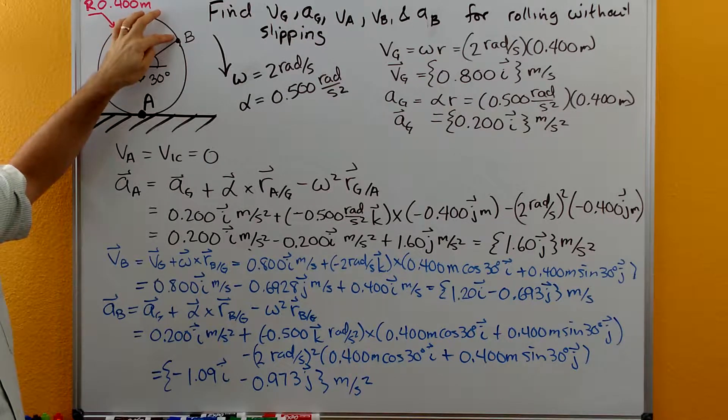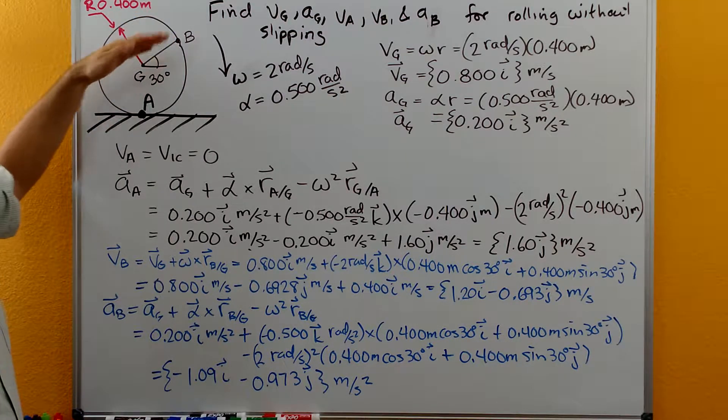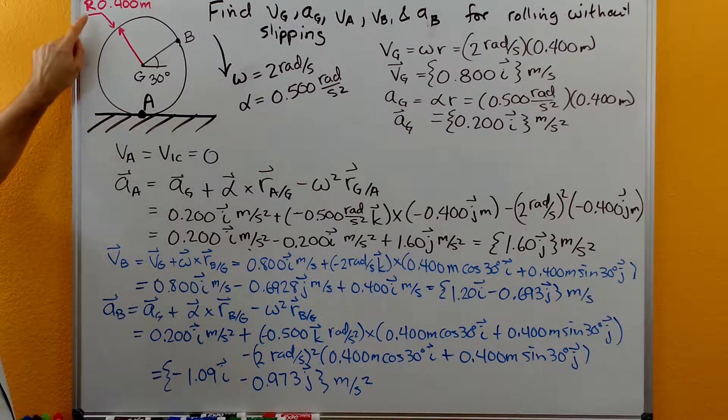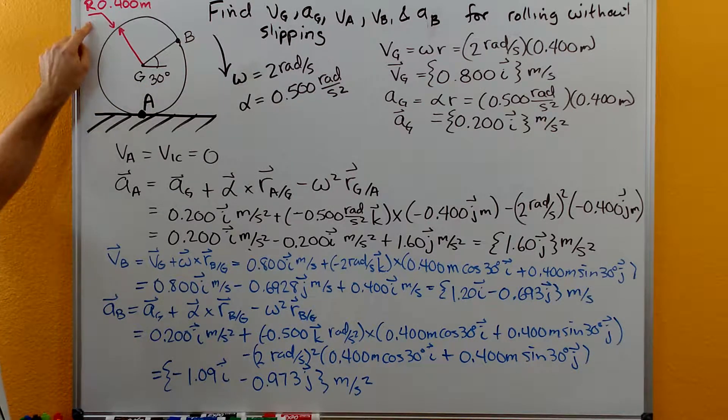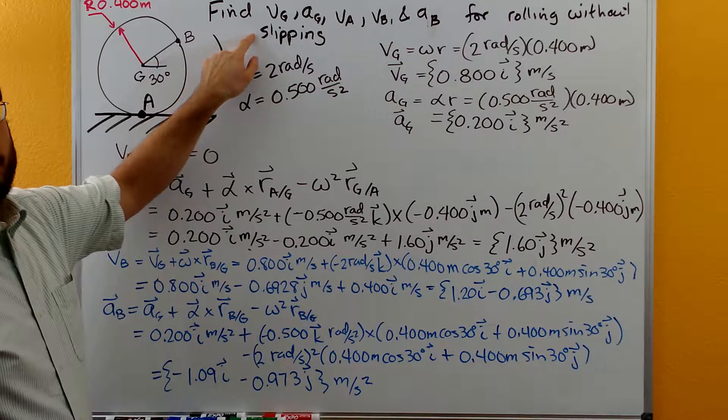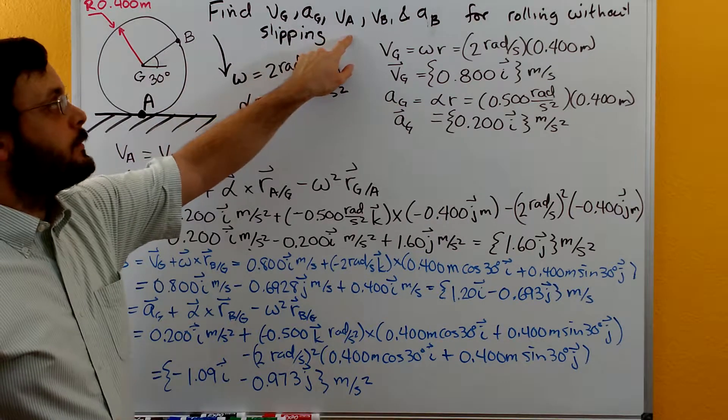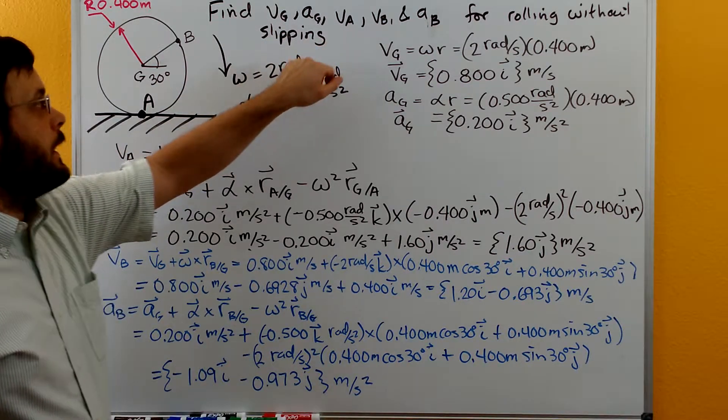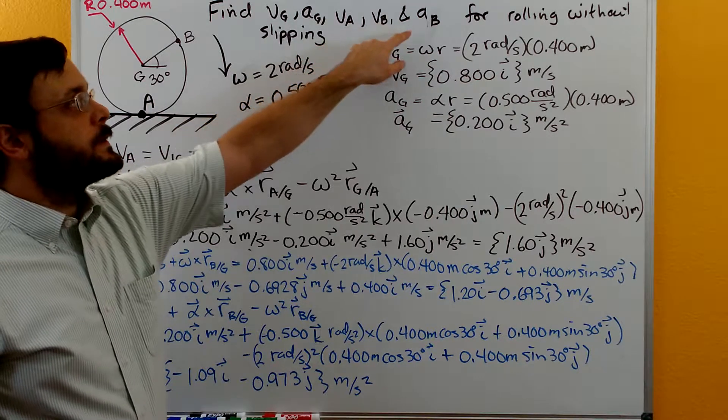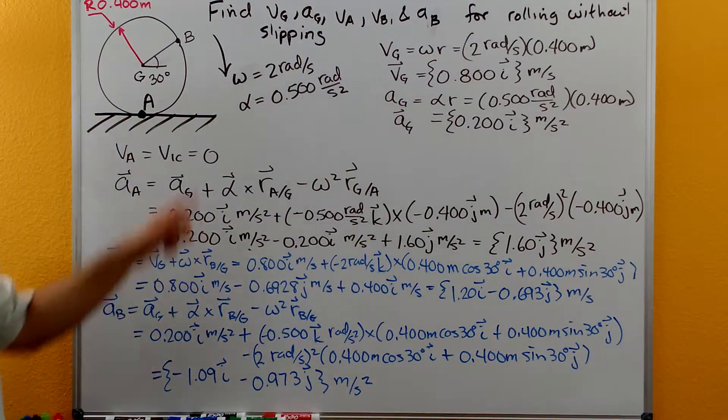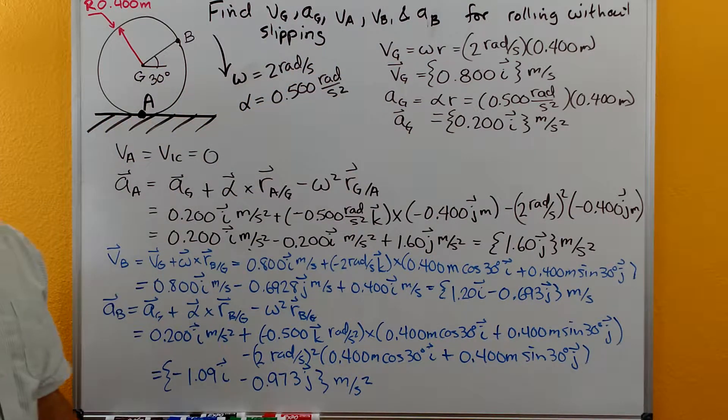And then we have point B over here that's at a 30 degree angle out on the radius. The radius of the wheel is 0.4 meters and we need to find the velocity at the center of gravity, the velocity at A, and then also the velocity and acceleration at point B if it is rolling without slipping.